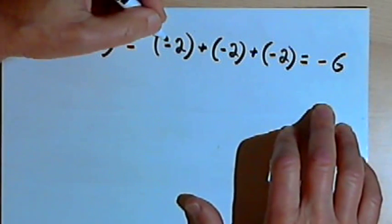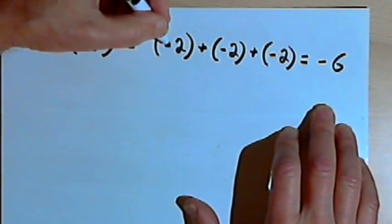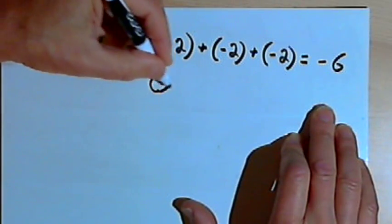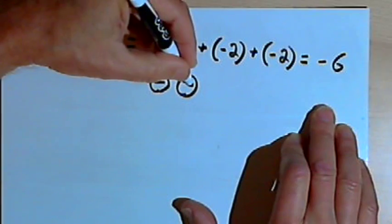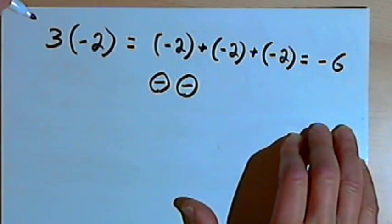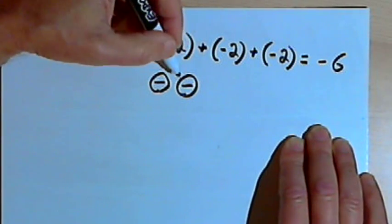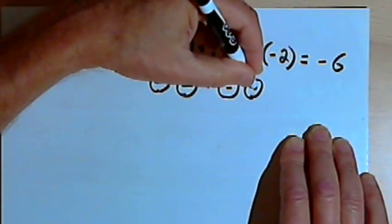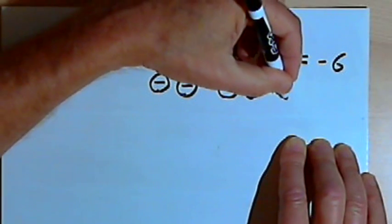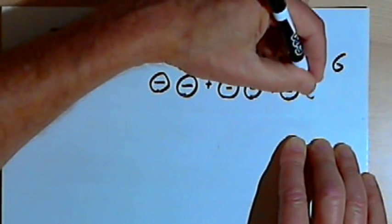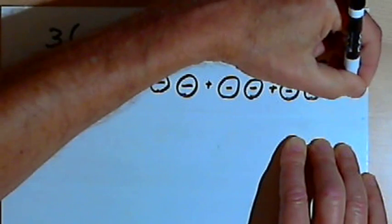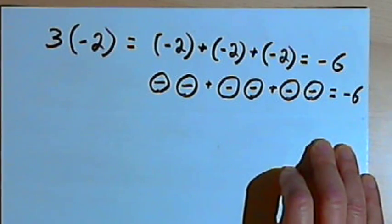Now, if I want a visual way of demonstrating this, I could think of each negative 2 as being represented by two chips, each one with a negative sign on it. So I'm going to have these two negative chips, and then I want another pair of negative chips for the second negative 2, and a third pair of negative chips for the third negative 2. And when I add up all my negative chips, there are six of them. So, once again, I get the equivalent of negative 6.